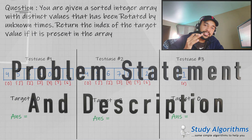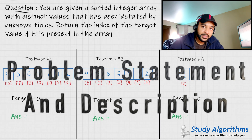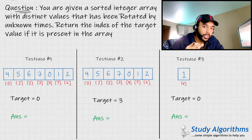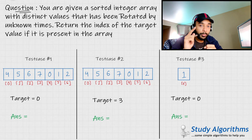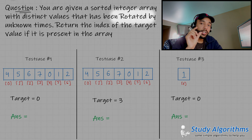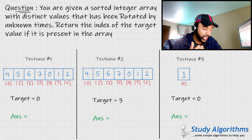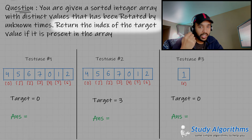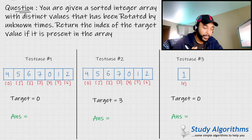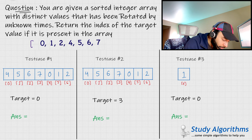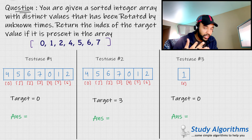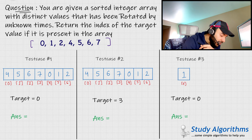The best way to understand a problem is to understand the given sample test cases. As per the problem, it is pretty straightforward. You are given an array that has some sorted integers, but the catch is that this array has been rotated by an unknown number of times. In this array, you need to find a target value. If you can find that value, return the index; else just return minus 1. You can assume your initial array was something like a normal sorted array, but it has been rotated and you do not know how many times.